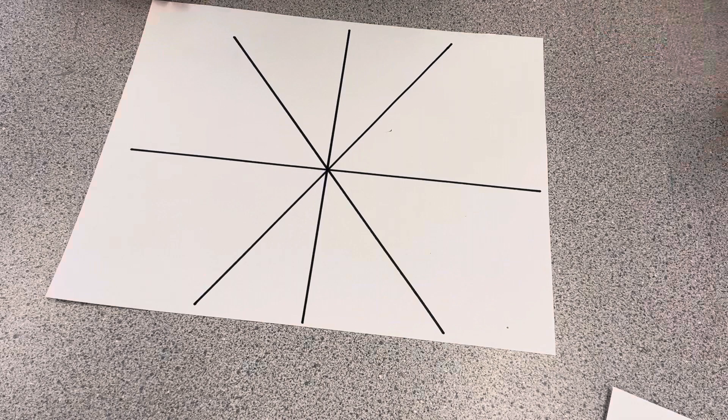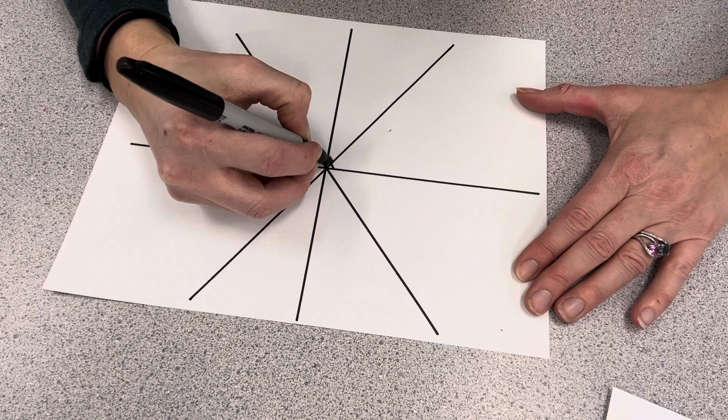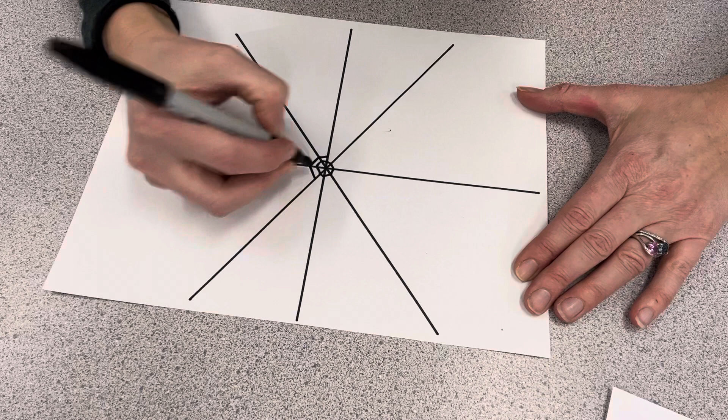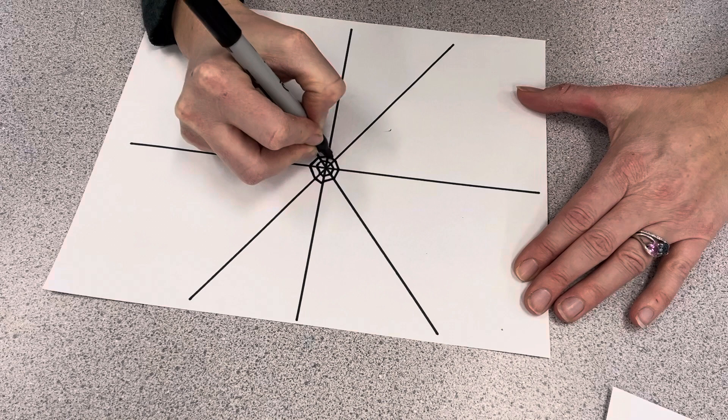Okay, so the first web I'm going to show you just has a straight line. So you're just going to go round and round with a straight line. And you can use a ruler to do this, or you can freehand it without any guidance. Okay, and you're just going to go round and round and round.